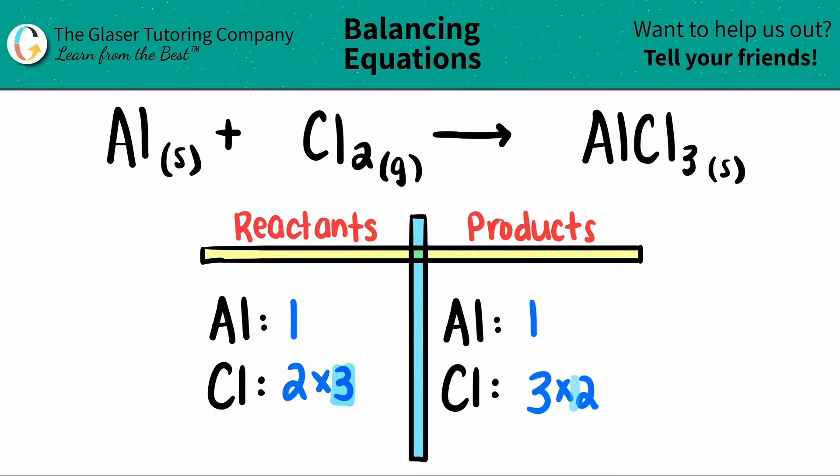The numbers that you're multiplying are the numbers that turn into the coefficients in front of the elements that you're trying to solve for. I'm going to place it here, because the chlorine is here. And on the other side, I'm going to place it here, because the chlorine is in this compound. So I'm going to put a three here, and I'm going to put a two here. Three times two is six, and then two times three chlorines is six chlorines.